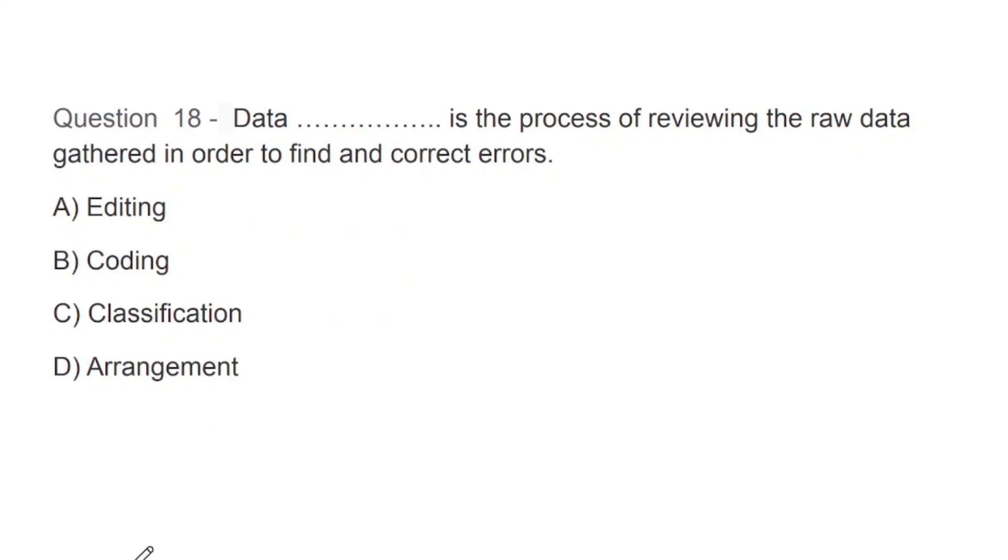Question number 18: Data blank is the process of reviewing the raw data. When we review raw data gathered in order to find and correct errors, what is this process - editing, coding, classification, or arrangement? The correct answer is A, that is editing.